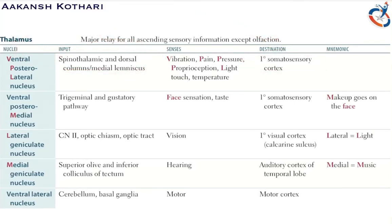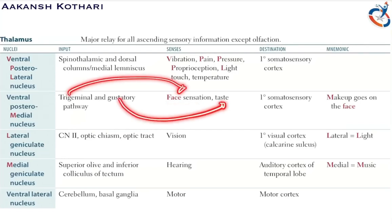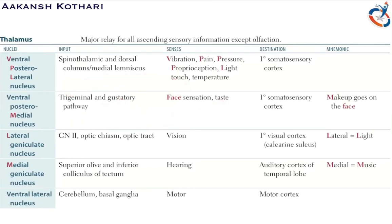The ventral posterior medial nucleus (VPM) receives input primarily from the trigeminal and gustatory pathways. It carries face sensation (trigeminal) and taste (gustatory). The destination is also the primary somatosensory cortex.